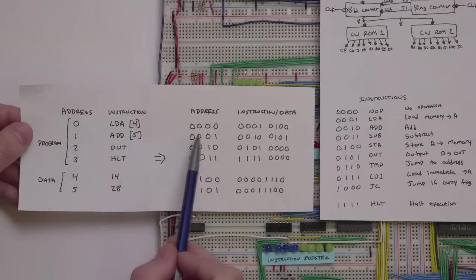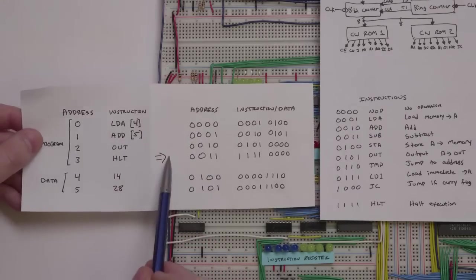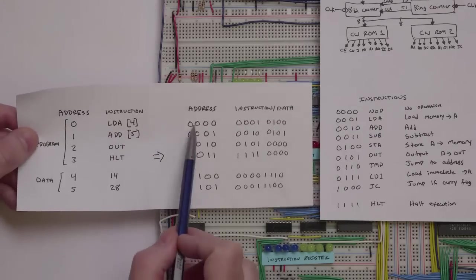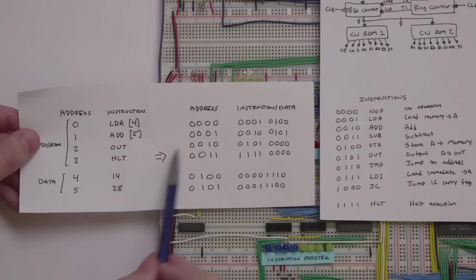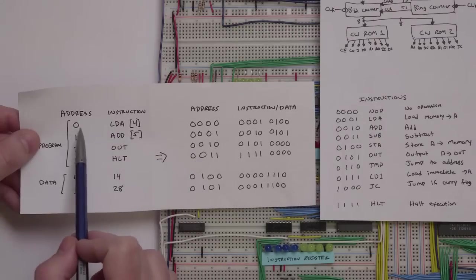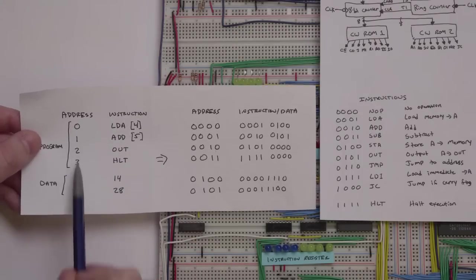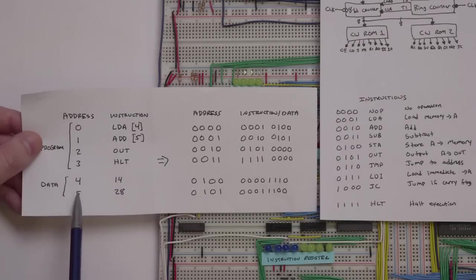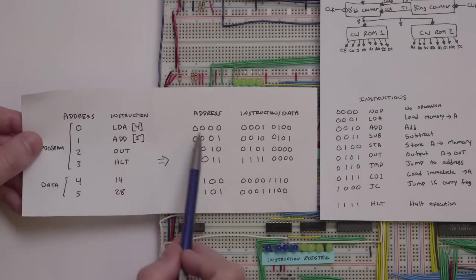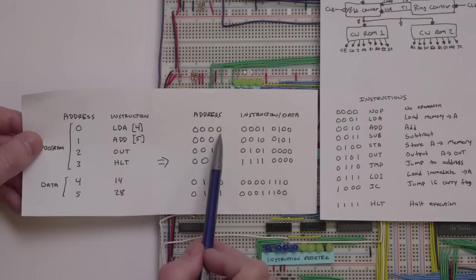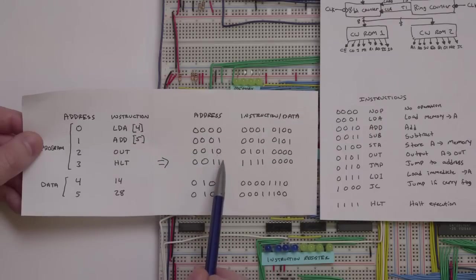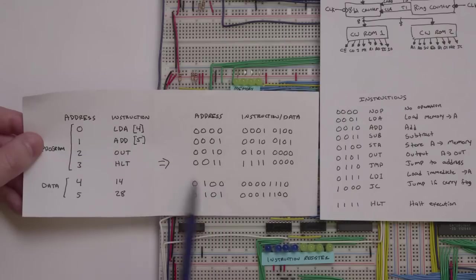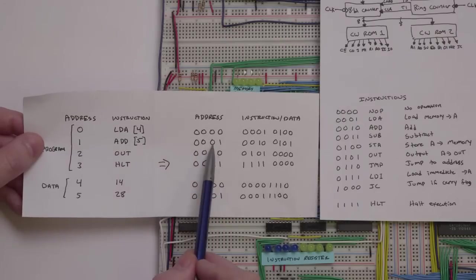The address portion of our program is just what address we're putting each of these commands into. The addresses are zero, one, two, three, four, and five — a total of six bytes of memory for the program and the data. If we just convert those to binary: zero, one, two, three, four, and five in binary.